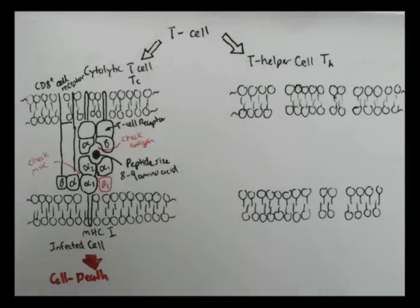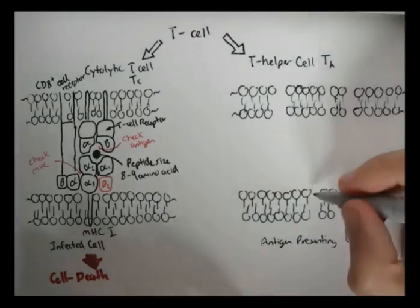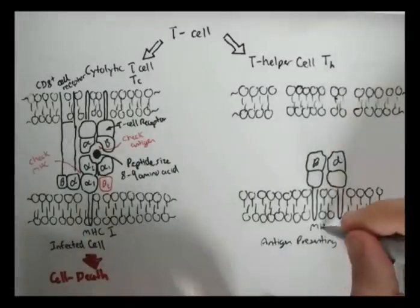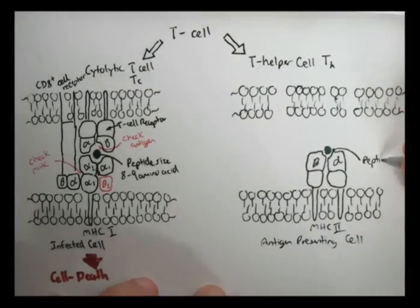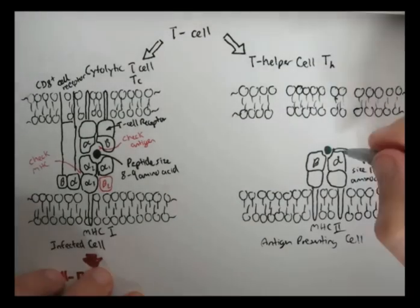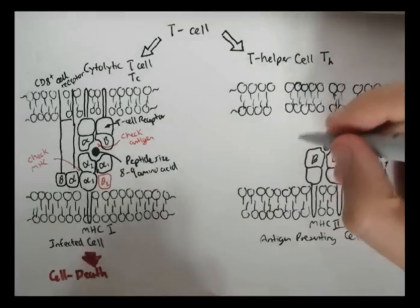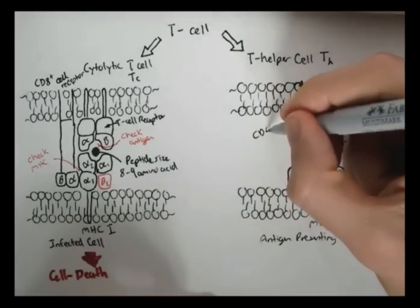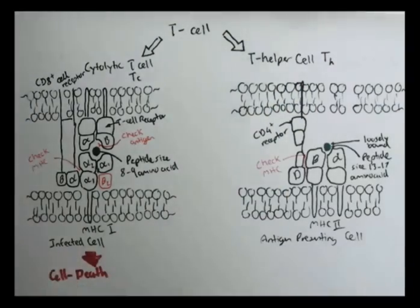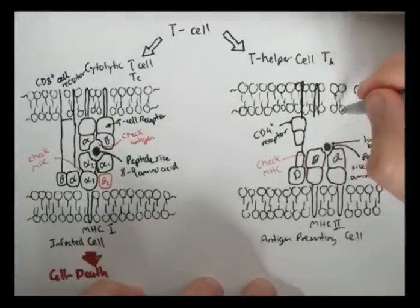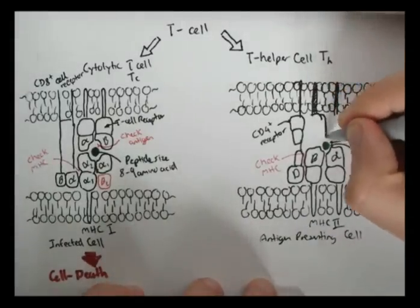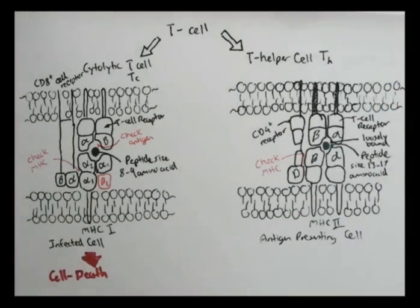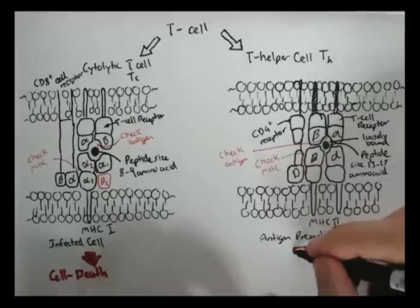So the antigen-presenting cells present the MHC class 2 molecule, which consists of alpha 1 and 2 and the opposite beta 1 and 2. And it presents itself to the T helper cells. The MHC class 2 molecules can bind and present much bigger peptides or antigens, about 13 to 17 amino acids in size. And because of this, this peptide is usually loosely bound. Now the CD4 receptor of the T helper cell then checks the MHC molecule and sees if it's an MHC class 2 molecule. And then another receptor, same like the T killer cell's receptor, called the T cell receptor, checks for that specific antigen also. And if both the receptors of the T helper cells is happy with both the MHC class 2, the MHC molecule and the antigen,